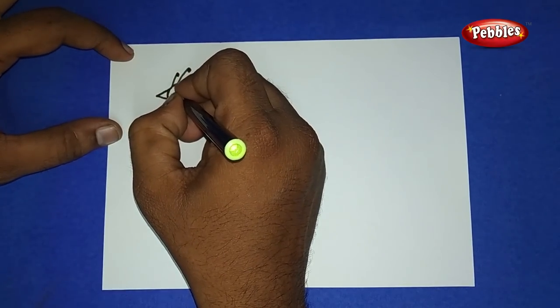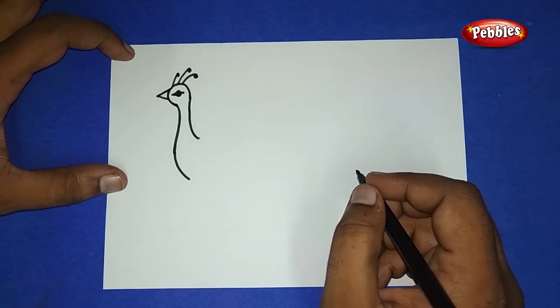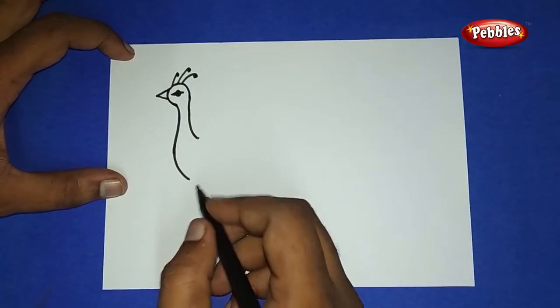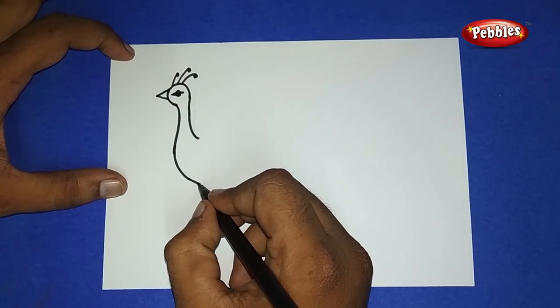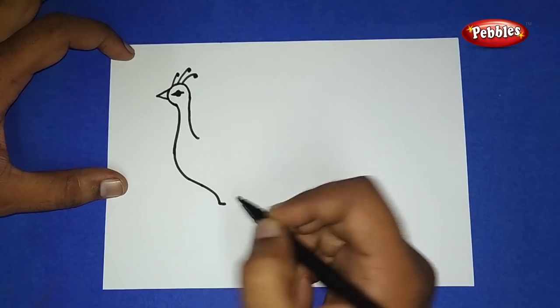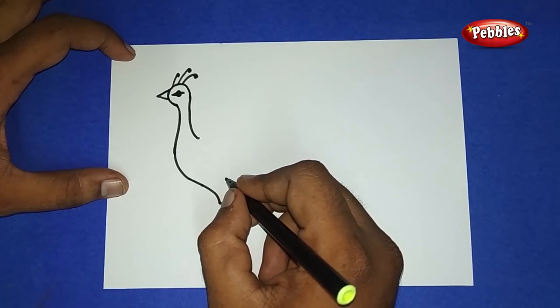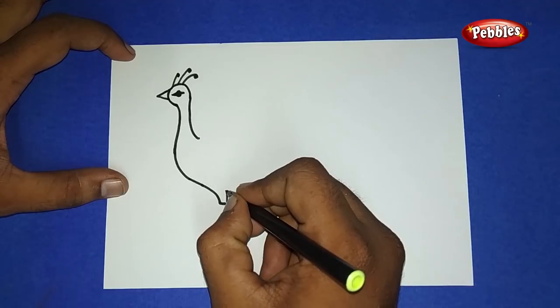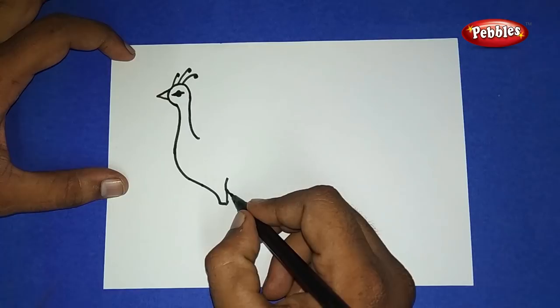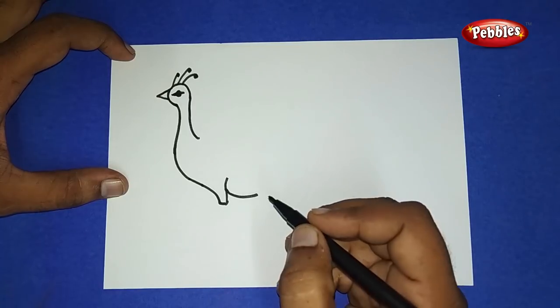And now we have finished the face part. Coming to the body part, come slantingly down and again have a cut there. Draw a straight line and go upside. Now again, draw an upside arch.